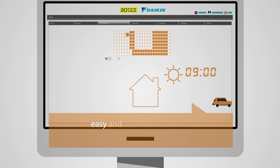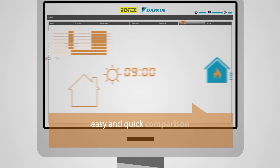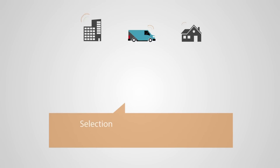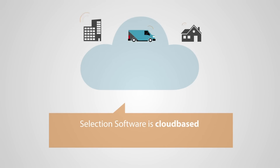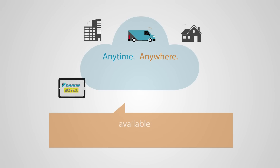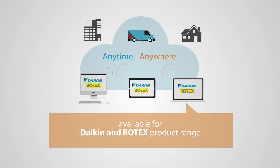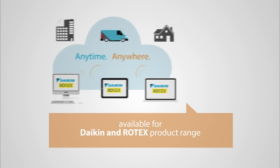Every proposal can easily and quickly be compared to the results of a conventional heating system. This new selection software is cloud-based, allowing you to access it anytime, anywhere, and it's available for both the Daikin and Rotex product range.